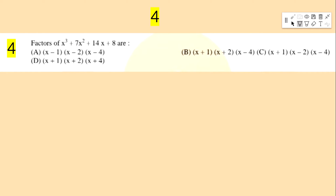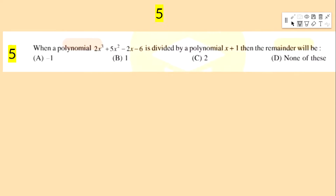Next question: factors of x³ + 7x² + 14x + 8 are — options: (x−1)(x−2)(x−4), (x+1)(x+2)(x−4), (x+1)(x+2)(x+4).